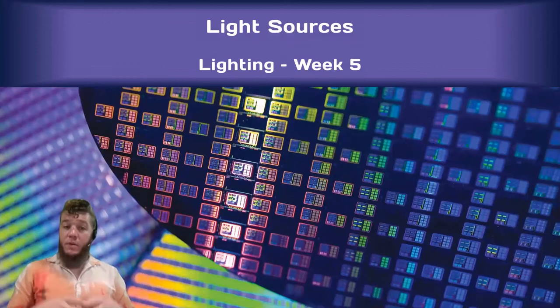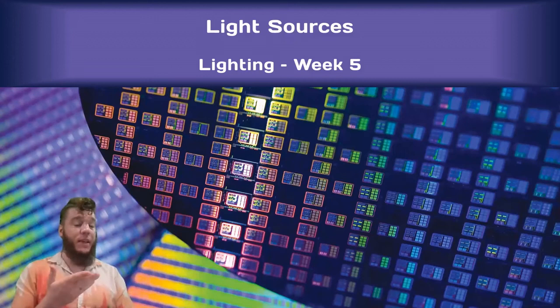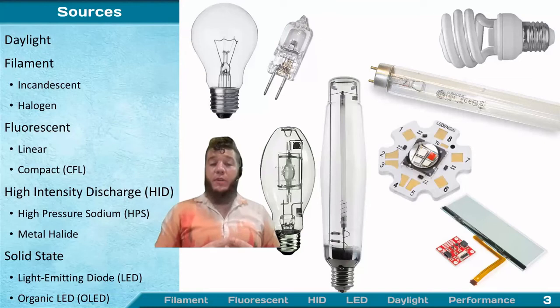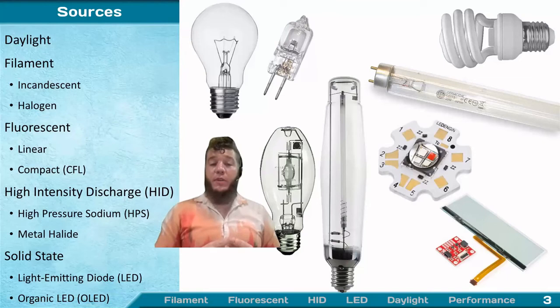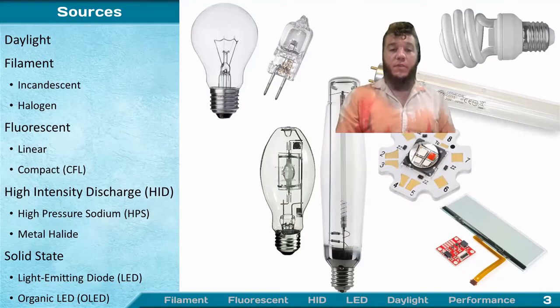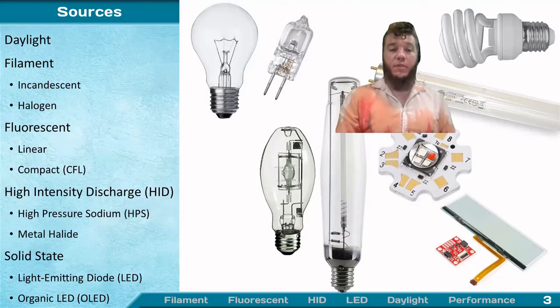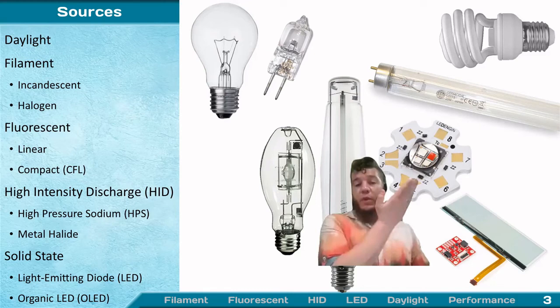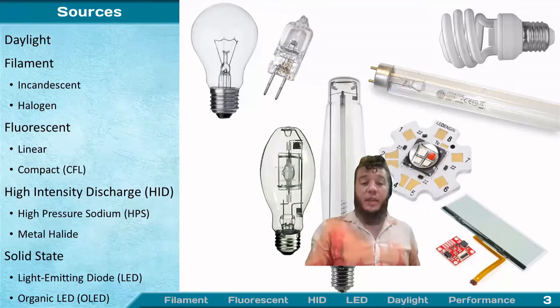Moving on to light sources. There is one truly important light source: LEDs — and hopefully soon OLEDs — along with daylight. We still have a variety of older sources in use: most commonly linear fluorescent in buildings, CFLs at home, and incandescents being phased out due to aggressively poor energy efficiency, all being replaced with LEDs. This is the range of light sources typically seen in architectural installations today.